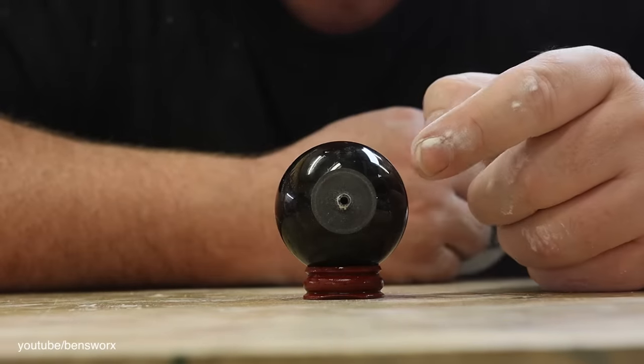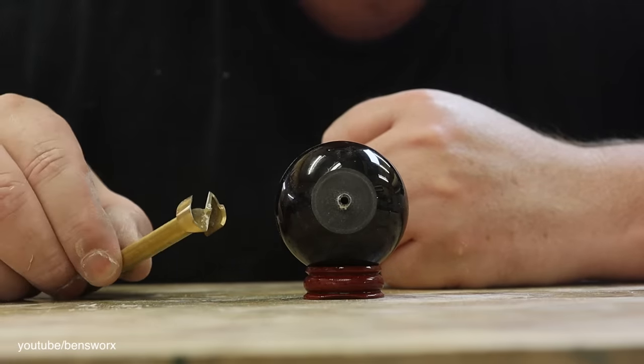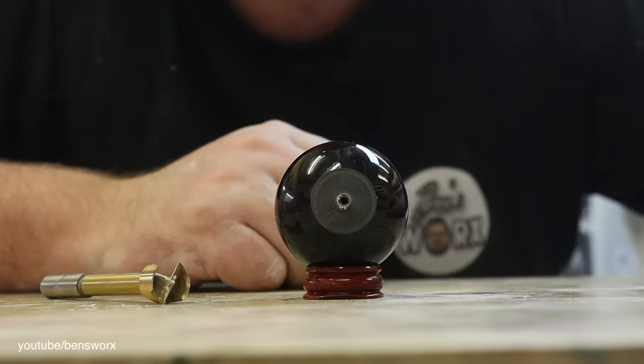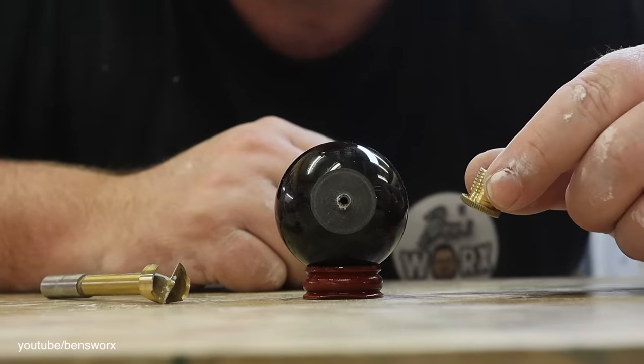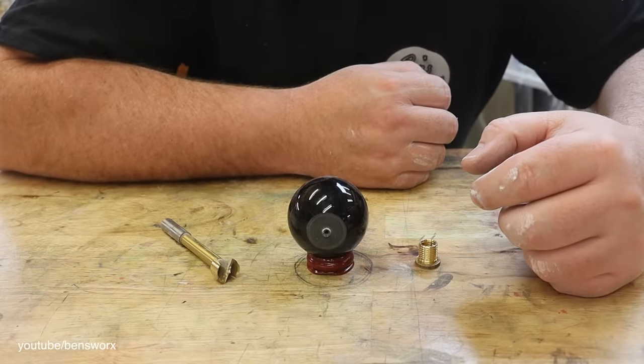It's now time for me to explain why I drilled this small hole. It's so I knew where the centre was, so I could drill a larger hole. And then once I've drilled that larger hole, I can put in this threaded insert. And once that insert's glued in, we'll have ourselves a shift knob.